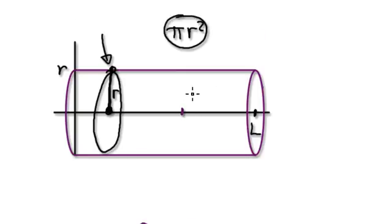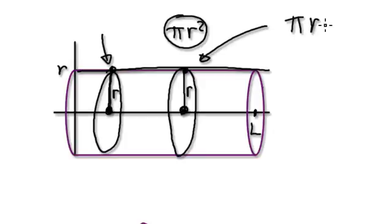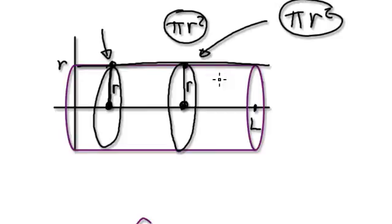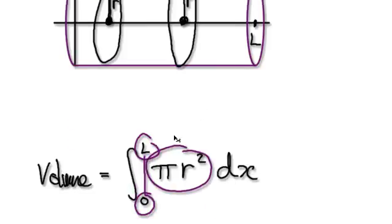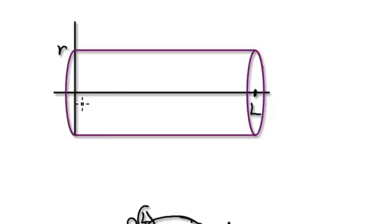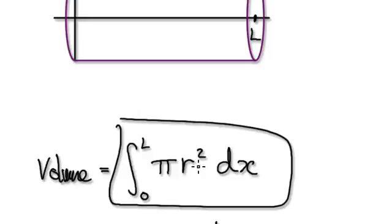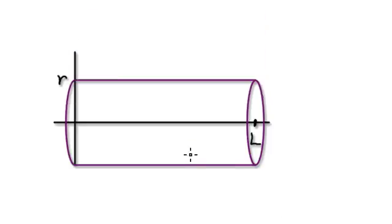Don't forget you need to integrate from zero to capital L. If you look at any disk along the cylinder — say when x is at some position — the height will still be r, because r is a constant. So for any disk it will still be pi r squared. The area is constant, and we drag it from zero to capital H. So the volume is given by integrating pi r squared from zero to H.